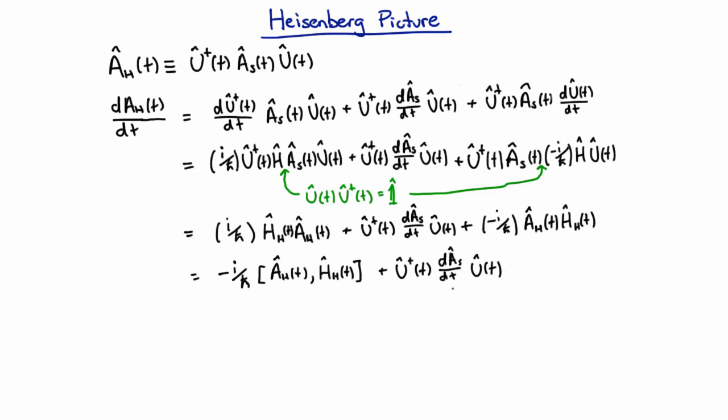Now typically this second term here is zero because normally the operators we consider don't explicitly depend on time in the Schrödinger picture. For example, we're usually used to things like momentum, or position, or the Hamiltonian and so forth, and they're all usually static, and so this term is usually zero, and so this commutator term is the most important term.